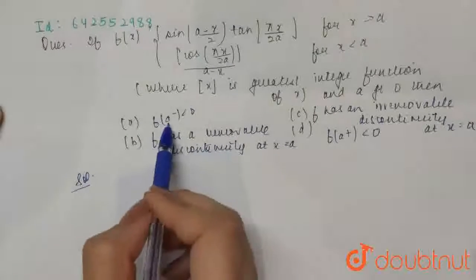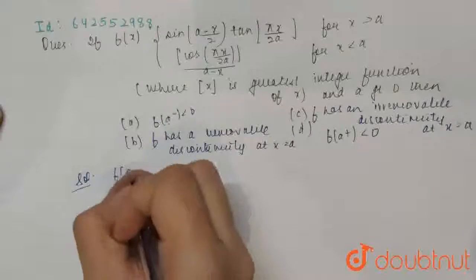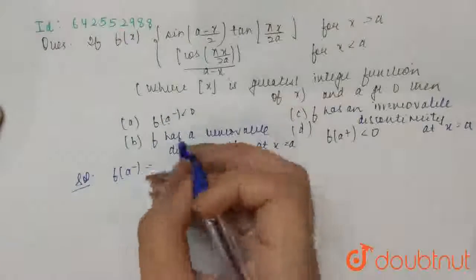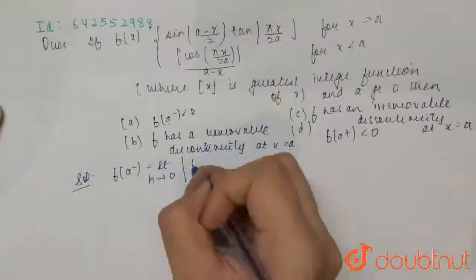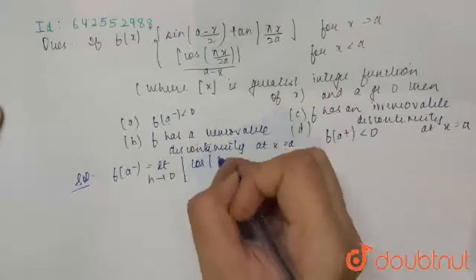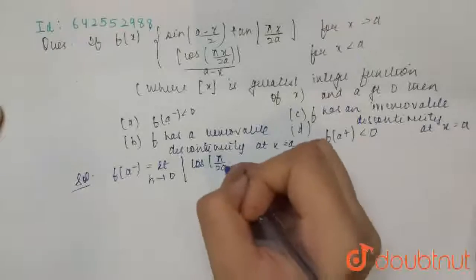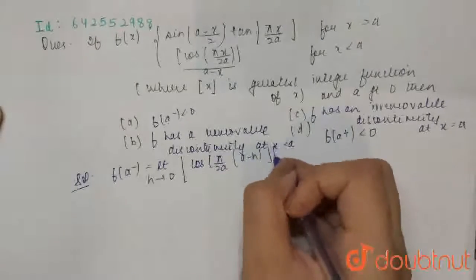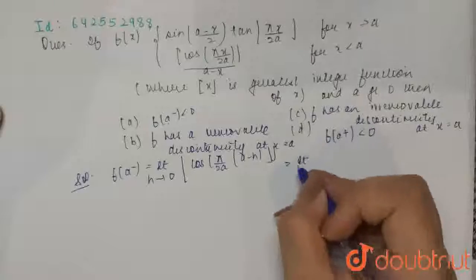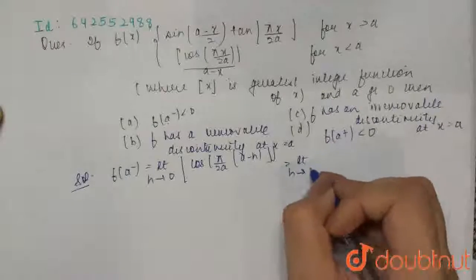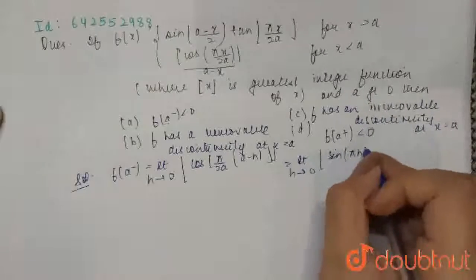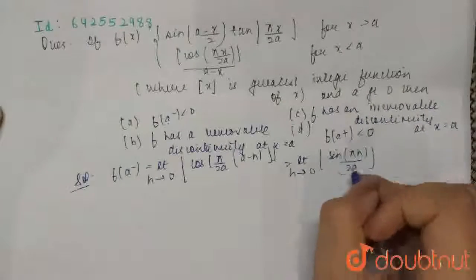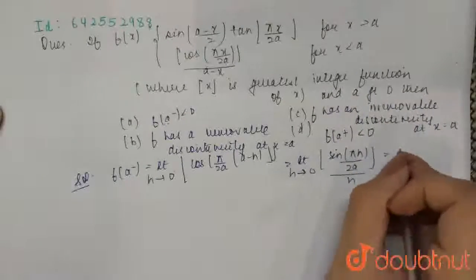First of all, we will find out these values like f of a minus. This will be limit h goes to 0, cos of pi by 2a times (a minus h). This becomes limit h goes to 0, sin of pi h by 2a divided by h. This equals 0.